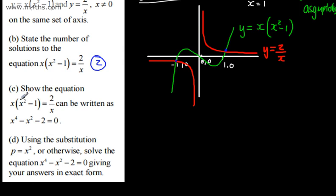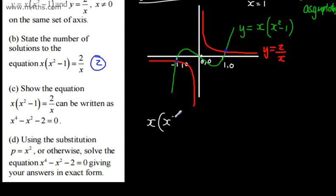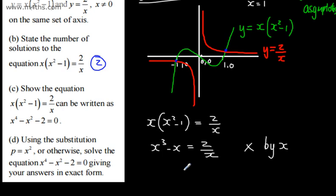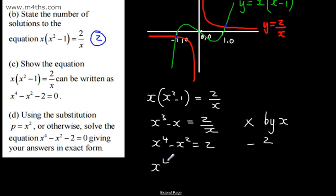In part C, we're asked to show that x(x² - 1) = 2/x can be written as x⁴ - x² - 2 = 0. On any 'show that' question, I'm very explicit in what I'm doing. Multiplying through: x³ - x = 2/x. Then multiply by x: x⁴ - x² = 2. Then subtract 2: x⁴ - x² - 2 = 0, as required. On a show-that question, marks are easy to drop, so show every step clearly.